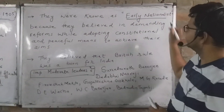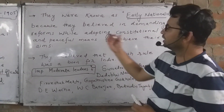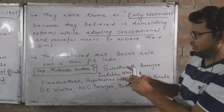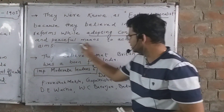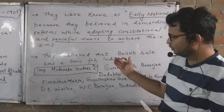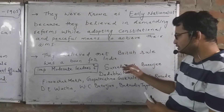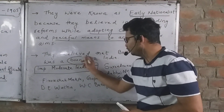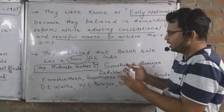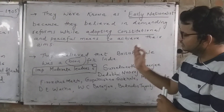Moderates were also called early nationalists. They followed constitutional and peaceful means — they were not violent. Their objective was based on the view that British rule is a boon, that when Britishers came to India it was a good time, and British rule should be made better.